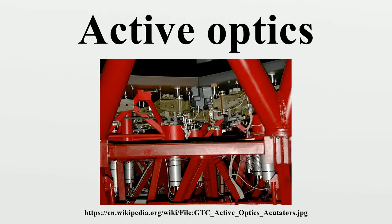Active optics is a technology used with reflecting telescopes, developed in the 1980s, which actively shapes the telescope's mirrors to prevent deformation due to external influences such as wind, temperature, and mechanical stress. Without active optics, the construction of 8-meter class telescopes is not possible, nor would telescopes with segmented mirrors be feasible.